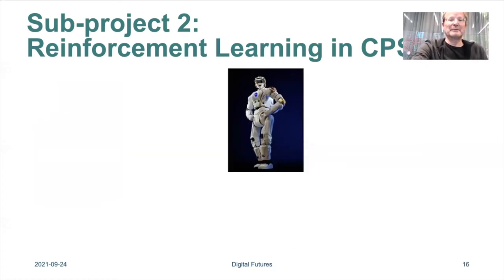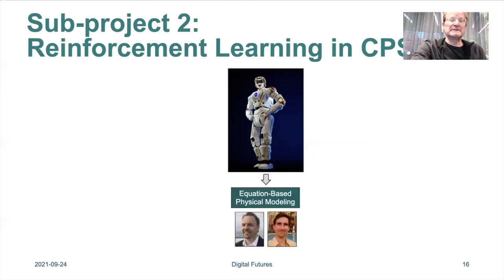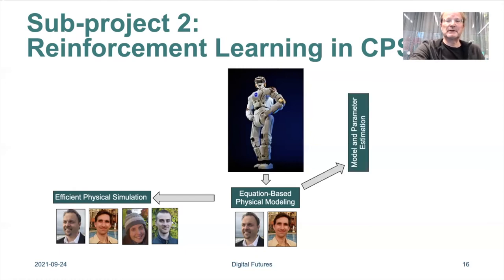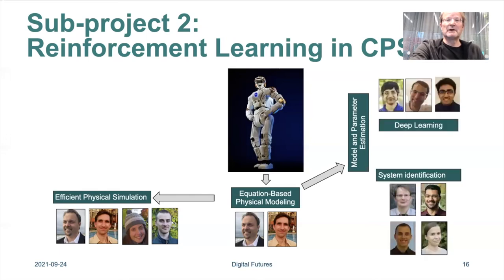The principle of the project is as follows: by using physical models we can minimize the amount of experiments needed. However, this generates a lot of equations, so simulations need to be done efficiently. These models also contain unknown parameters — like the mass of a robot — that need to be determined from experimental data. For that we need parameter estimation using system identification or machine learning techniques.